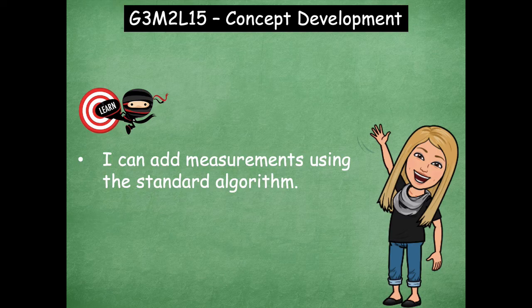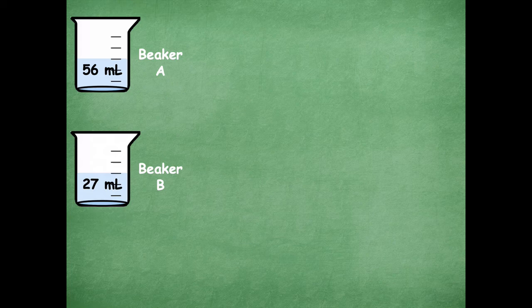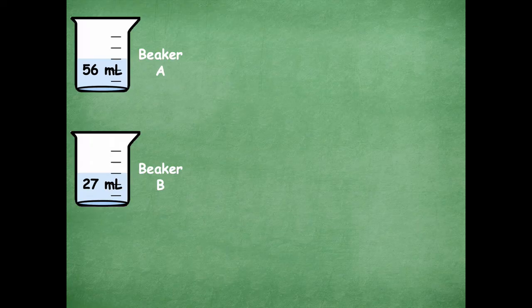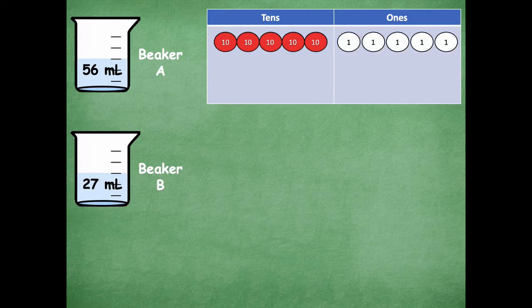So let's jump in and get started. Here I have beaker A and it has 56 milliliters of liquid. Then I have beaker B that has 27 milliliters of liquid. So I want to model both of these amounts using my place value disks on the place value chart. Here's my place value chart. I have five tens in 56 and I have six ones.